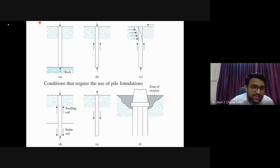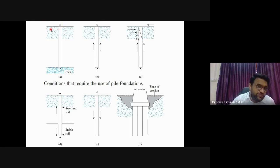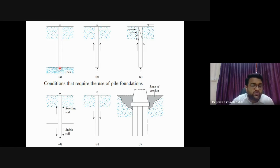In the Dadar region and towards Churchgate in Mumbai, rocks are at very shallow depth - just 2 to 5 meters. In such cases, we make a pile foundation socketed in the rock, which provides tremendous load-carrying capacity. For very high-rise structures, rock-socketed piles are commonly used. Where soil depth is sufficient, both end bearing and side friction contribute to capacity.